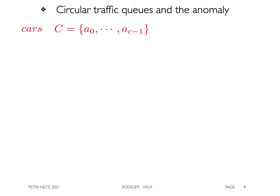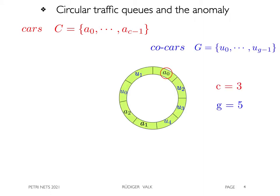Circular traffic queues are defined by a number C of traffic items called cars and a number G of co-traffic items called co-cars. Look at a car A0 in front of a co-car U2. They can swap their places, and in the same way A2 can swap with U0.